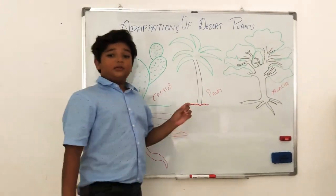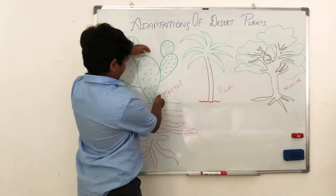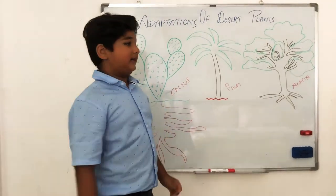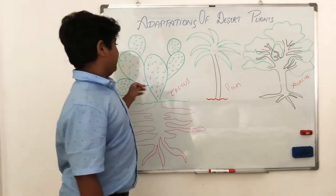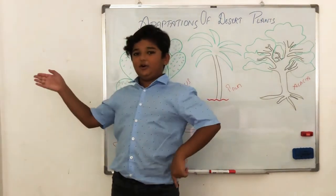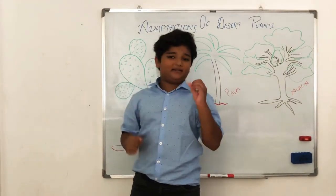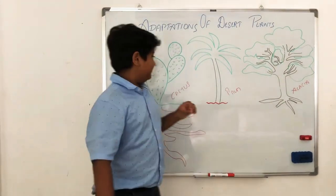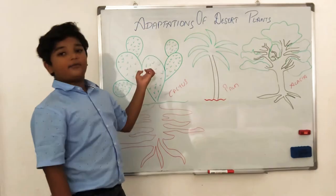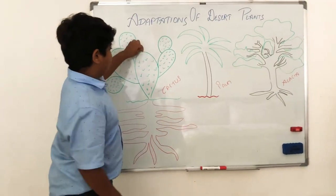Do you know that a cactus has this big thing, and this big thing is known as the stem of a cactus? That stem can absorb water from rainfall — and as I mentioned in my last video, deserts do get rainfall, but very little. The cactus absorbs that water inside its big, thick, green stem.